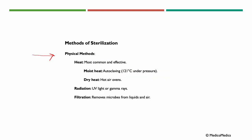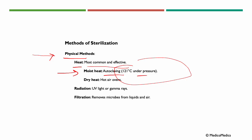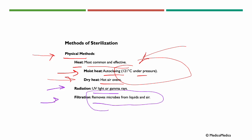Some physical methods of sterilization include heat. Moist heat is the most common and most effective method — through the process of autoclaving at 121 degrees Celsius under pressure, working like a pressure cooker. Then we have dry heat, like hot air ovens. Another way is irradiation, using UV light or gamma rays. And filtration, which removes microbes from liquid and air.